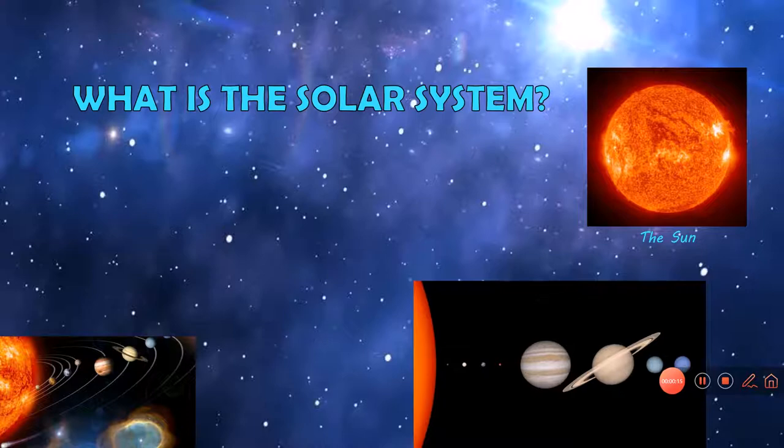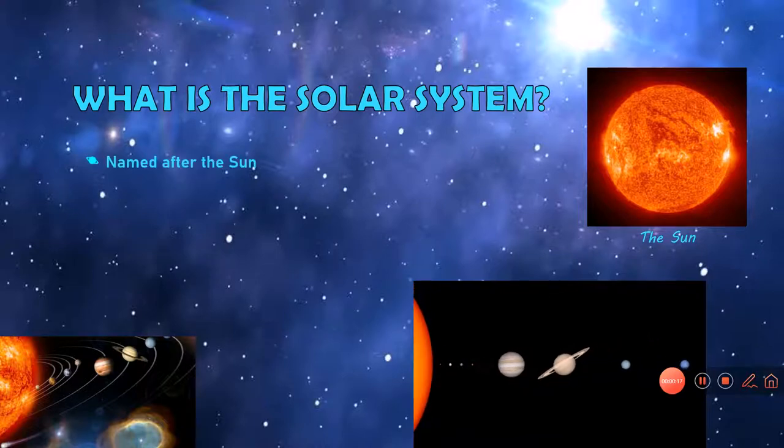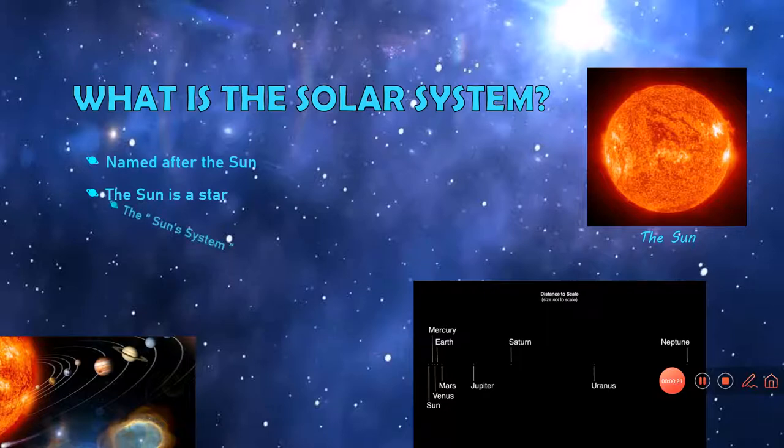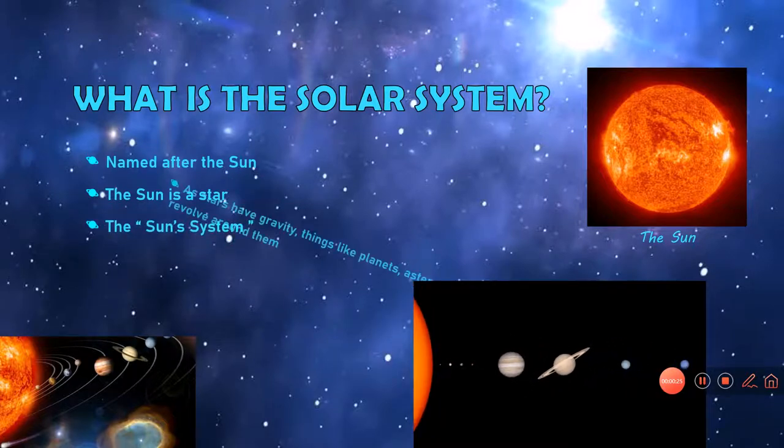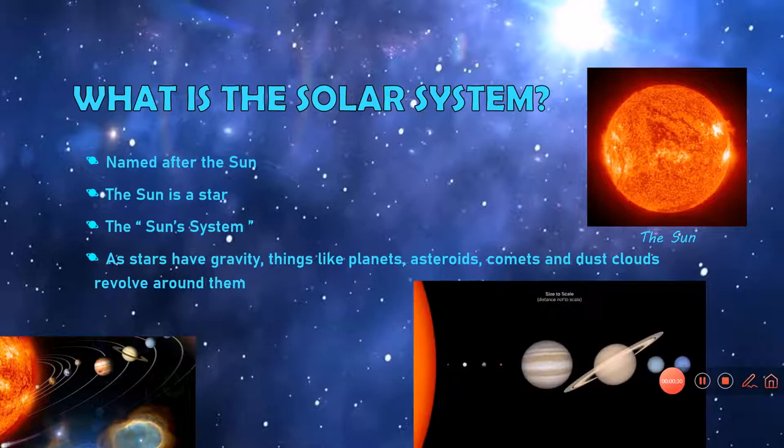So what is the solar system? The solar system is named after the Sun. The Sun is basically a star, and the solar system means the Sun's system because the Sun has gravity and things like planets, asteroids, comets, and dust clouds revolve around it.